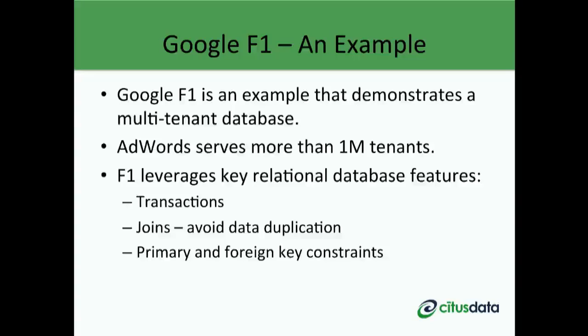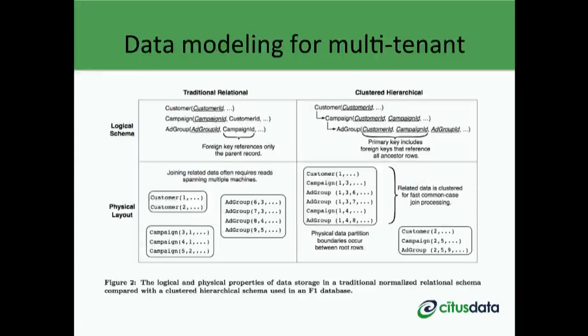Google's F1 paper is a good example demonstrating a multi-tenant database that scales this way. The paper discusses technical challenges associated with scaling the Google AdWords platform to over one million tenants, where every AdWords customer is a tenant. It also describes common RDBMS properties F1 leverages: transactions, joins across tables to avoid data duplication, and database constraints to ensure each tenant's data remains consistent.